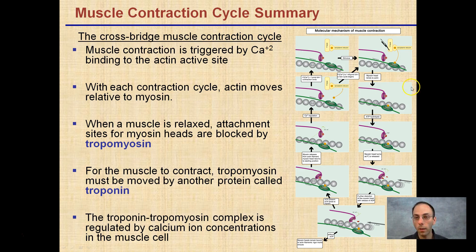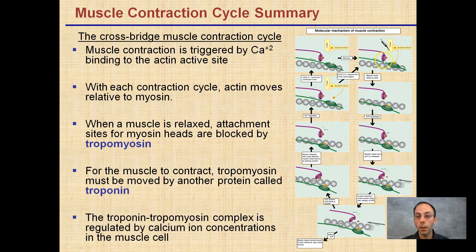In this crossbridge summary of muscle contraction, muscle contraction is triggered by calcium ions binding to the actin active site. The tropomyosin is actually blocking the myosin head from binding to the actin — the purple trying to bind to the gray actin cannot occur. With each contraction cycle, actin moves relative to myosin. Calcium first has to bind to the tropomyosin and get it out of the way, allowing the myosin to bind to the actin and the heads to turn, causing that sliding to occur.